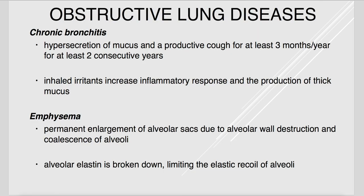Chronic bronchitis is defined as hypersecretion of mucus with a productive cough for at least three months per year for at least two consecutive years. Inhaled irritants cause inflammation — bronchitis — and with any irritation or inflammation, you produce mucus.